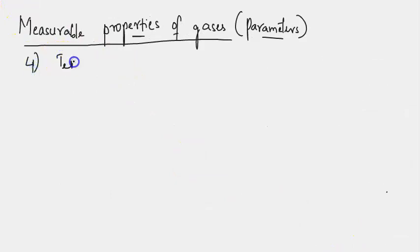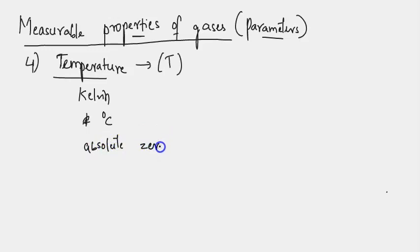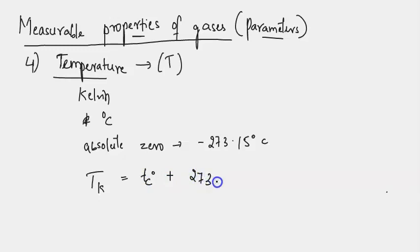The fourth parameter is temperature, represented by capital T. Temperature is the heat energy possessed by the particles of a substance, expressed in terms of temperature. The SI unit is the kelvin scale and the CGS unit is degrees centigrade. Absolute zero temperature is −273.15 degrees centigrade. We can convert from degrees centigrade to kelvin by adding 273 to the degree centigrade value. The temperature of a gas can be expressed in kelvin (absolute scale) or in degrees centigrade.